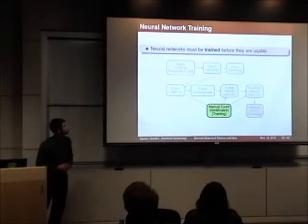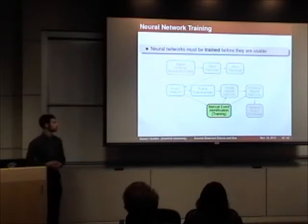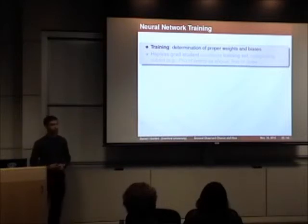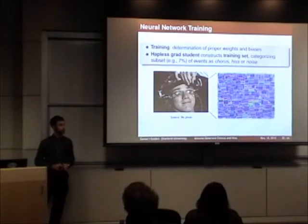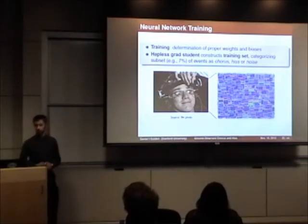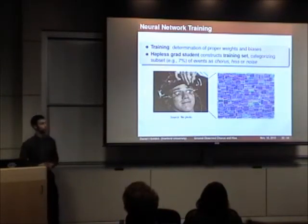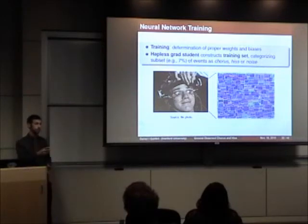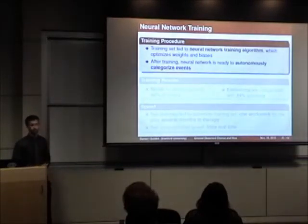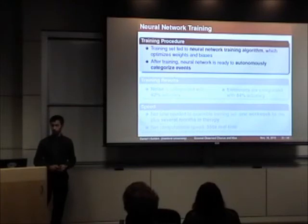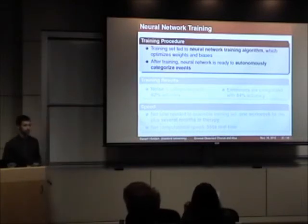Before the neural networks may operate autonomously, they must be manually trained. Training is the determination of the proper weights and biases for the neural network. The first step is the construction of a training set, in which a grad student manually goes through a subset of the detected events — 7% in this implementation — and manually decides whether each one is chorus, hiss, or noise. This training set is then fed into the neural network training algorithm, which optimizes the weights and biases.